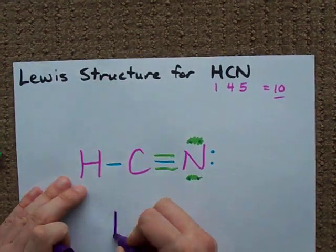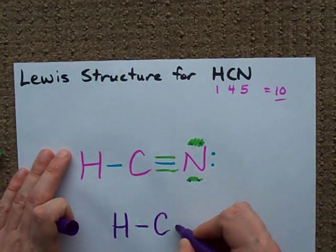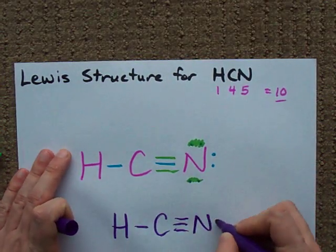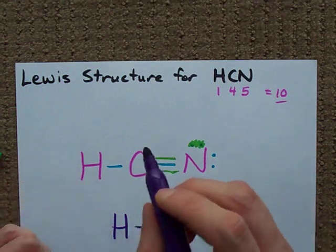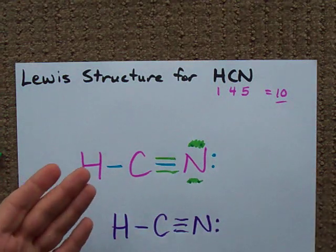Let me redraw it officially for you. H, single bond C, triple bond N, with a lone pair of electrons sitting on the N. That's the way it goes.